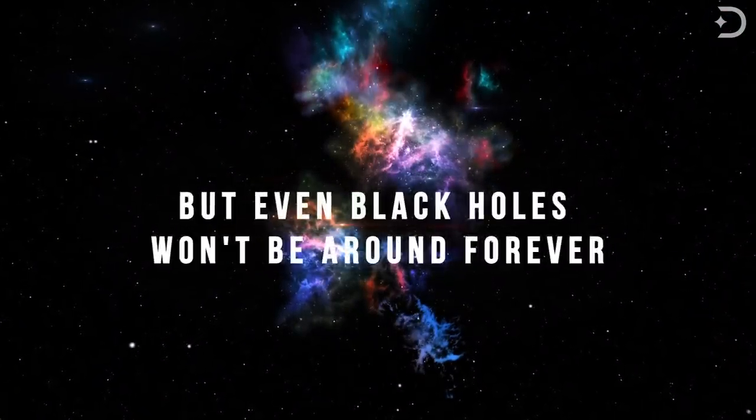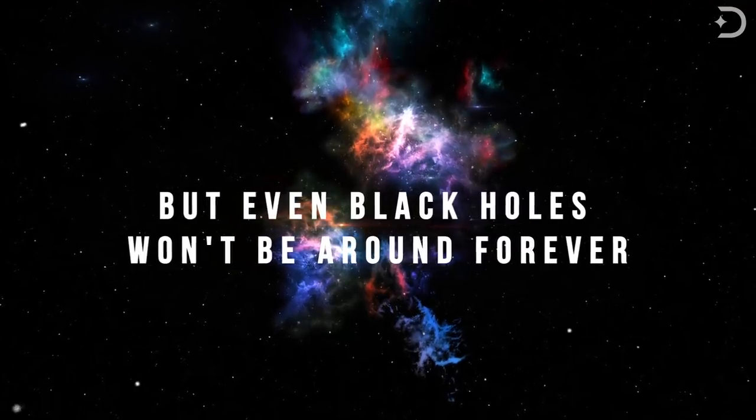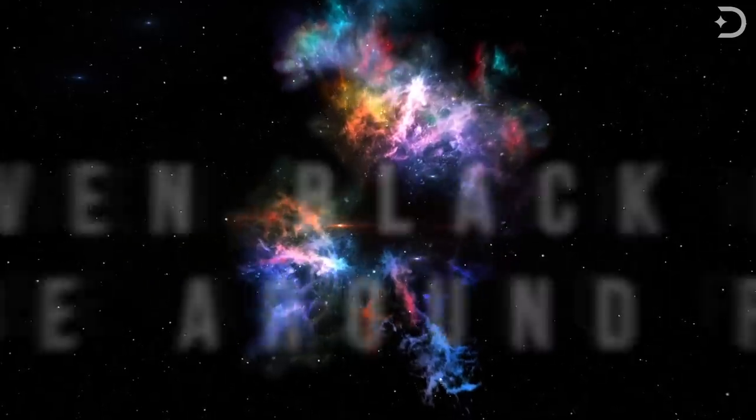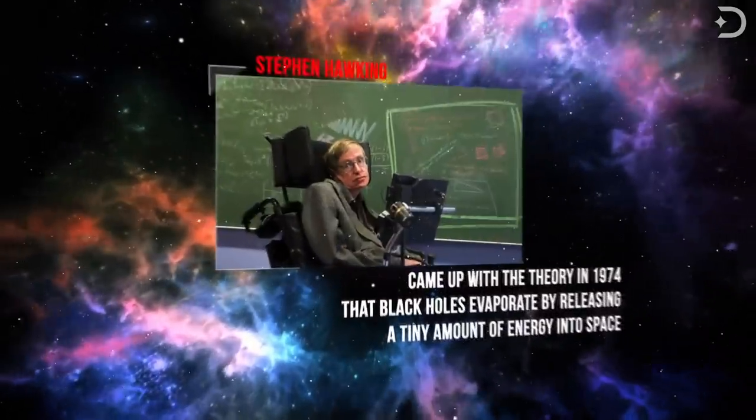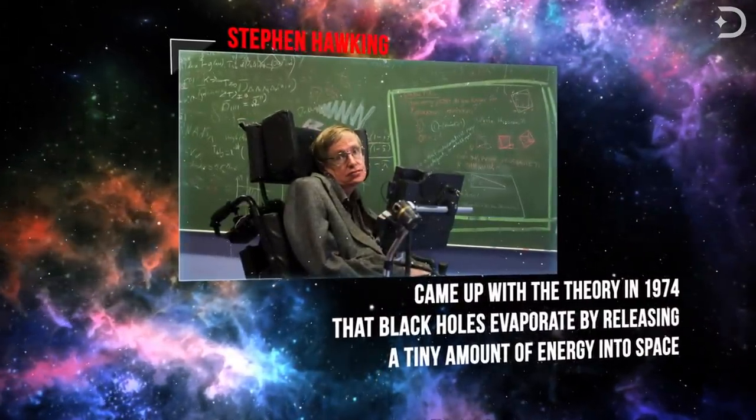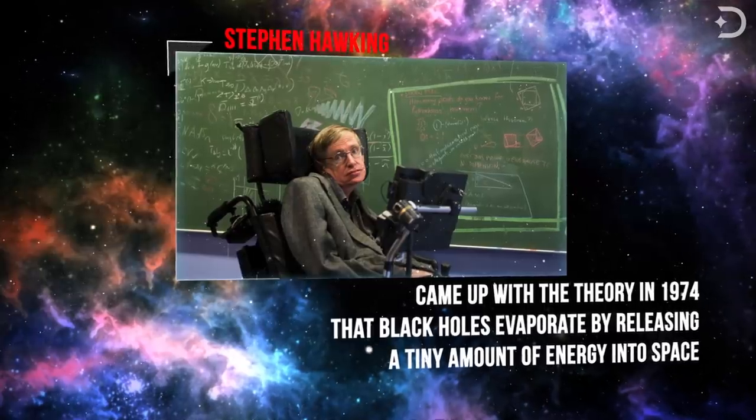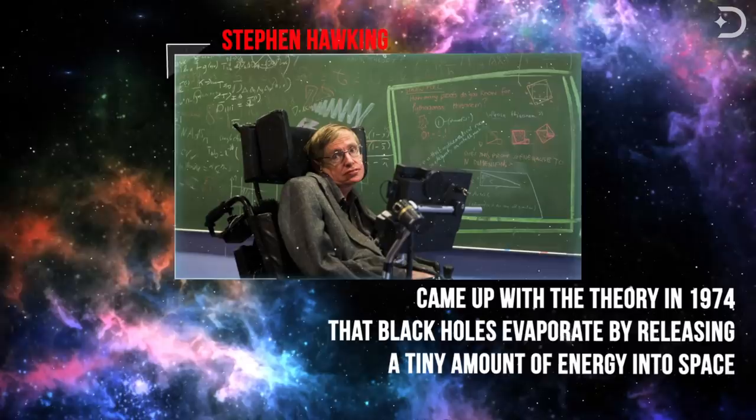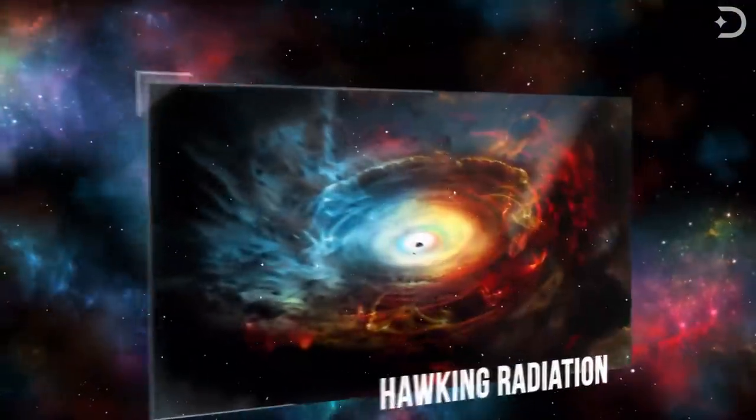But even black holes won't be around forever, and were once thought to be like one-way streets, where matter goes in but never comes out. It was the late great astrophysicist Stephen Hawking who came up with the theory in 1974 that black holes evaporate by releasing a tiny amount of energy into space. This is known as Hawking radiation.